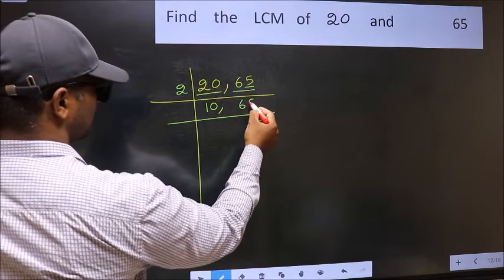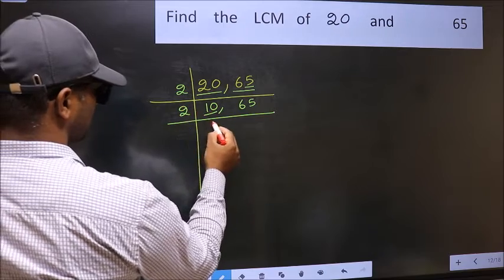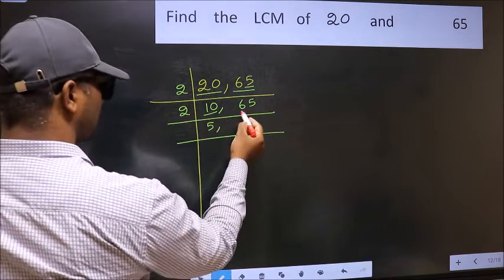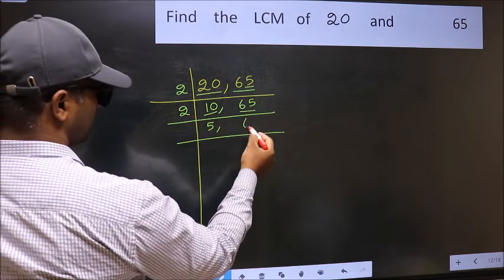Write it down as it is. Now we have 10. 10 is 2 fives, 10. The other number 65, not divisible by 2. Write it down as it is.